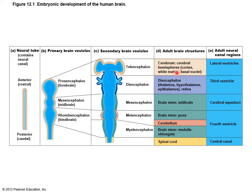The telencephalon gives rise to the cerebrum, the cerebral hemispheres, the cortex, the white matter, and the basal nuclei. The diencephalon is composed of the thalamus, hypothalamus, epithalamus, and the retina of the eye. The mesencephalon becomes the midbrain portion of the brain stem. The rhombencephalon gives rise to the pons, cerebellum, and the myelencephalon, which becomes the medulla oblongata, and inferior to that is the spinal cord.